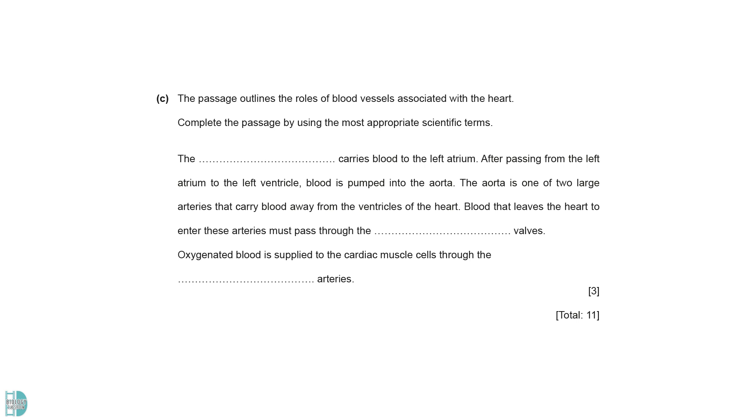In C, we have a passage with a few blanks. The pulmonary vein carries blood to the left atrium. It is the vein that delivers blood from the lungs to the heart. The valves found in the aorta and the pulmonary artery are the semilunar valves. They prevent the backflow of blood from the arteries into the heart. Blood is supplied to the cardiac muscle by the coronary arteries. They are the arteries that wrap around the outside of the heart.